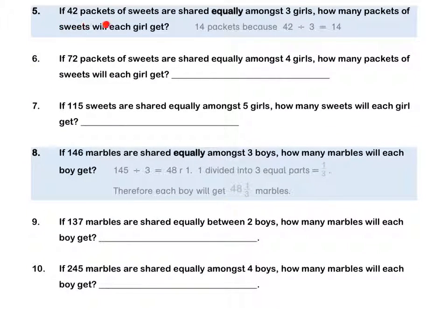If 42 packets of sweets are shared equally amongst 3 groups, how many packets of sweets will each group get? We have 42 sweets which we must divide amongst 3 groups. 42 divided by 3 is 14. Therefore each group will get 14 packets.